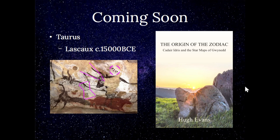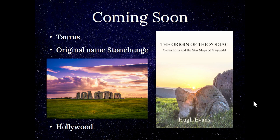Coming soon: a video on Taurus, the constellation and zodiac sign. I'll be referring to an image from the Lascaux caves, approximately 15,000 BCE, where you can see the Pleiades and Taurus drawn in part — Taurus is always drawn in part, and the origin of that was on the star maps of Gwyneth. That gives some idea of the age of the star maps described in my book 'Origin of the Zodiac.' Also coming soon: a short video on the original name of Stonehenge.